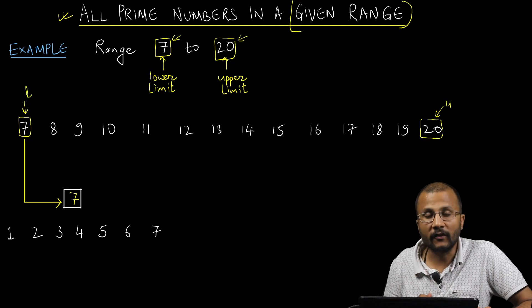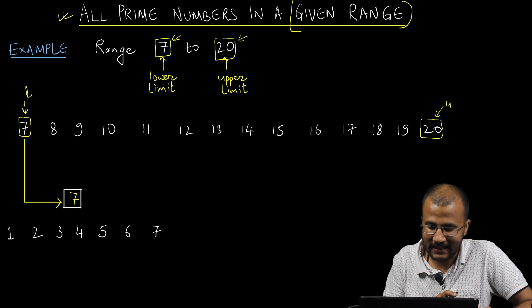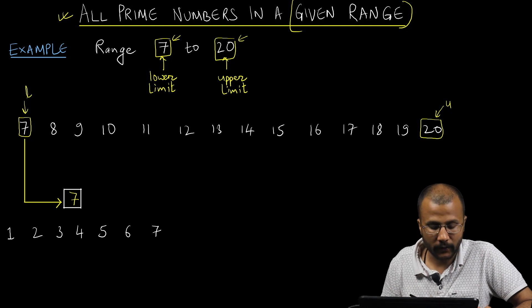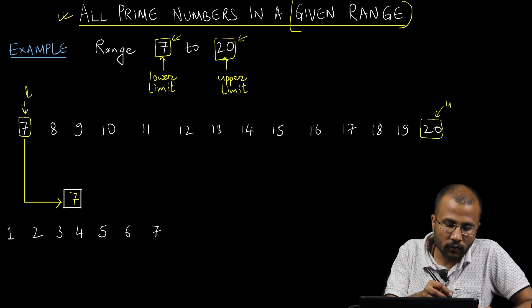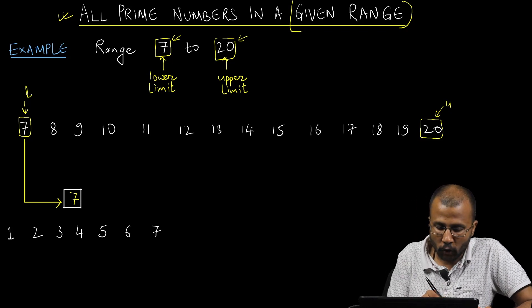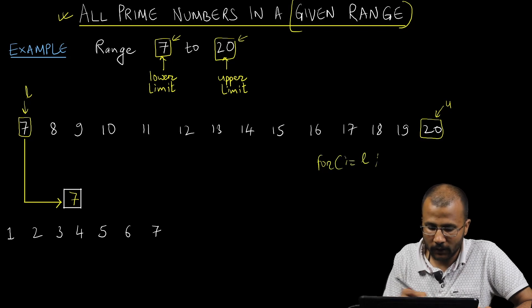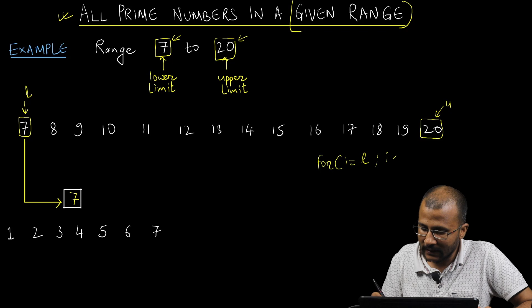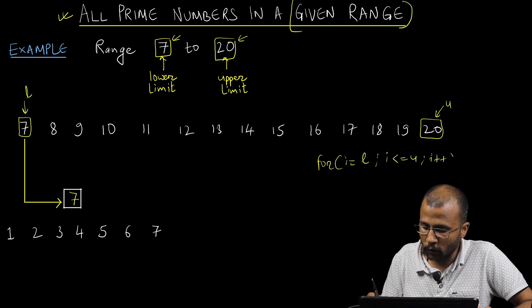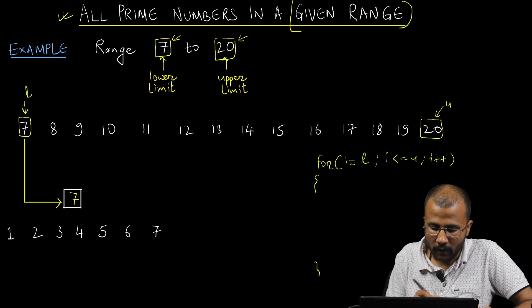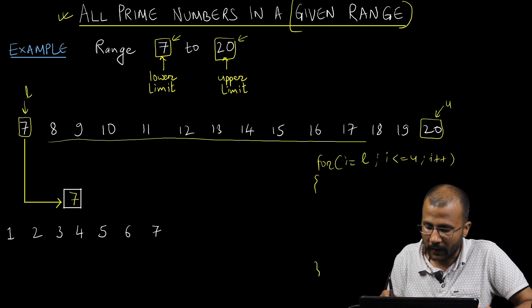Now what is the logic? How do I find out all the prime numbers between 7 and 20? First, I need to run a loop that will run over all these numbers starting from L to U. I can write something like: for i equals to L, i less than or equals to U, i++. This is a loop that will run over all these numbers one by one.